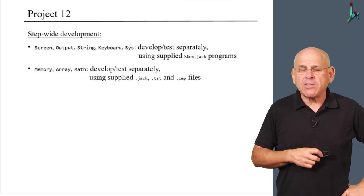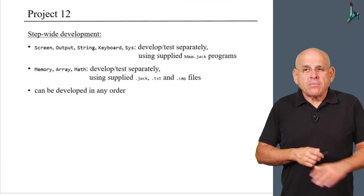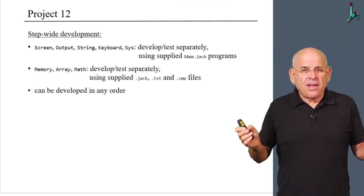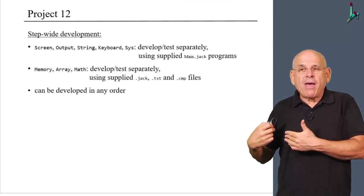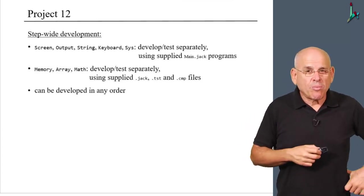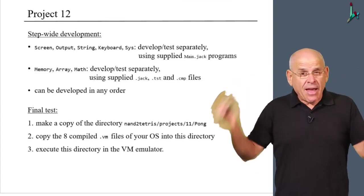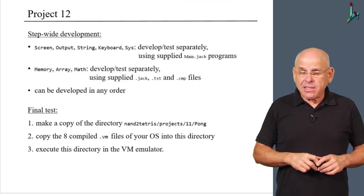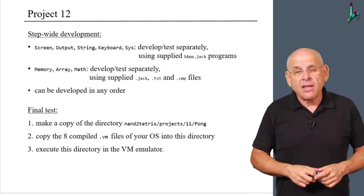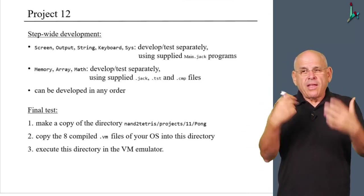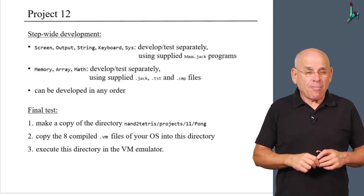And all the details are in the project page in the Nand2Tetris website. So I don't want to belabor on it because you can just go on and read it yourself. Now, any one of these classes can be developed in any order that you fancy, because you can always use the remaining seven classes to support it by default, if you use our VM emulator. And once you're done with these eight classes, we request that you do a final test.